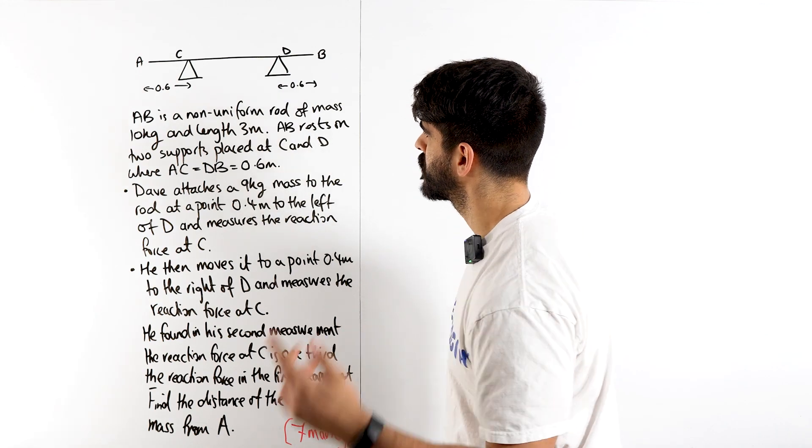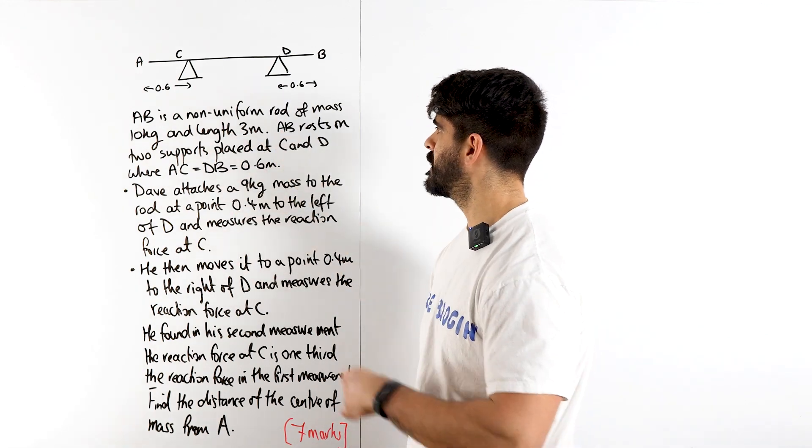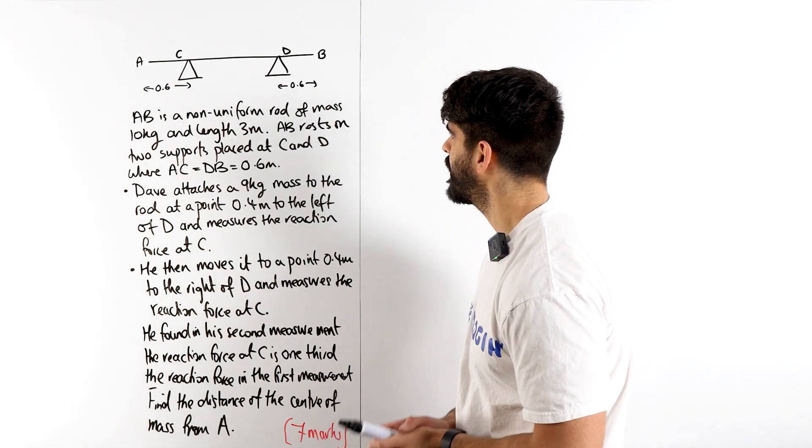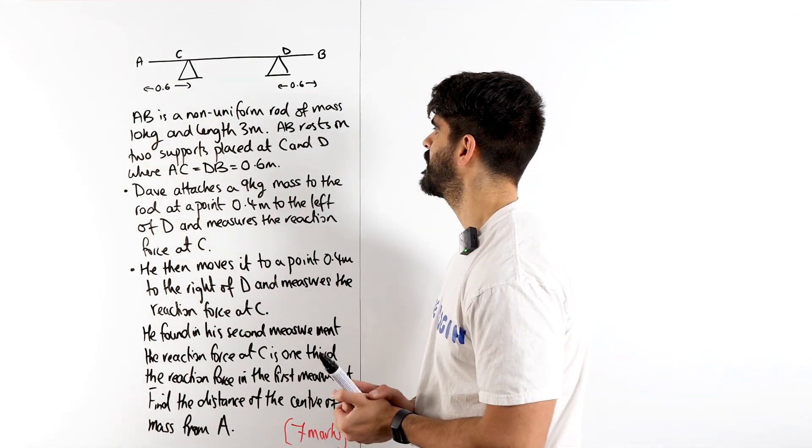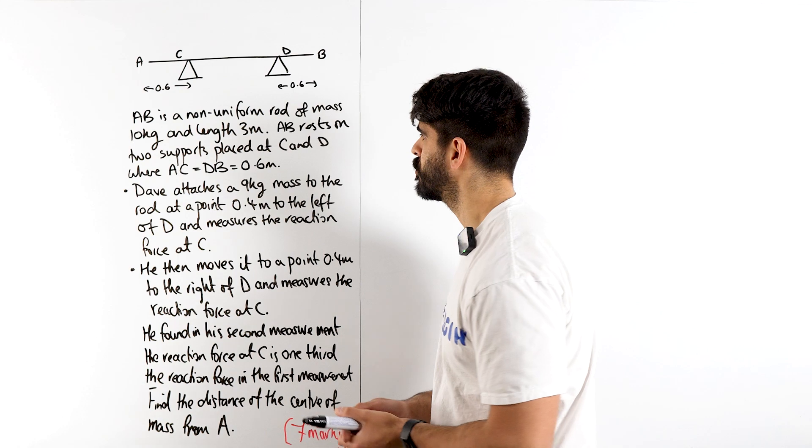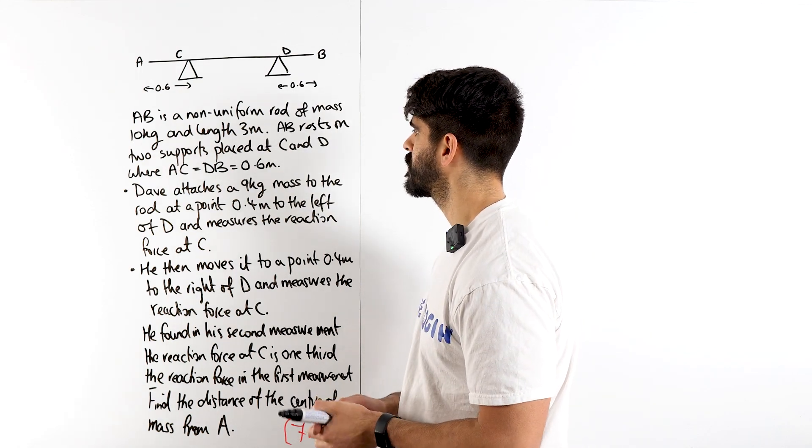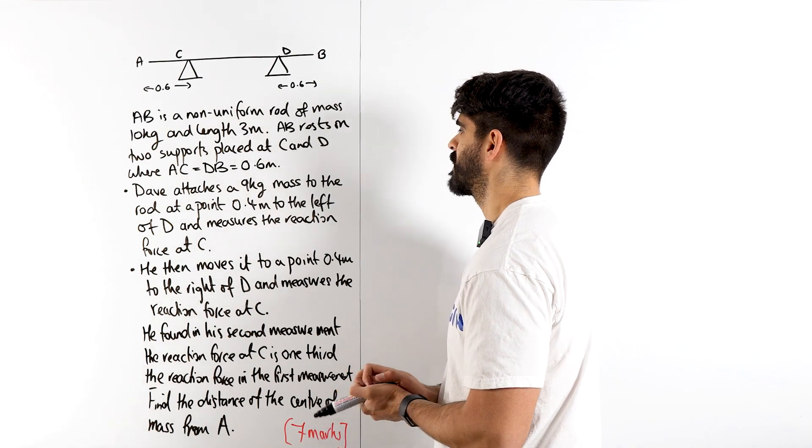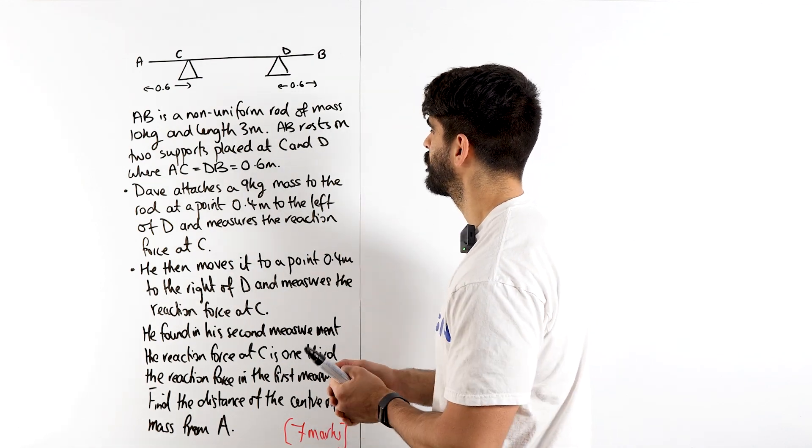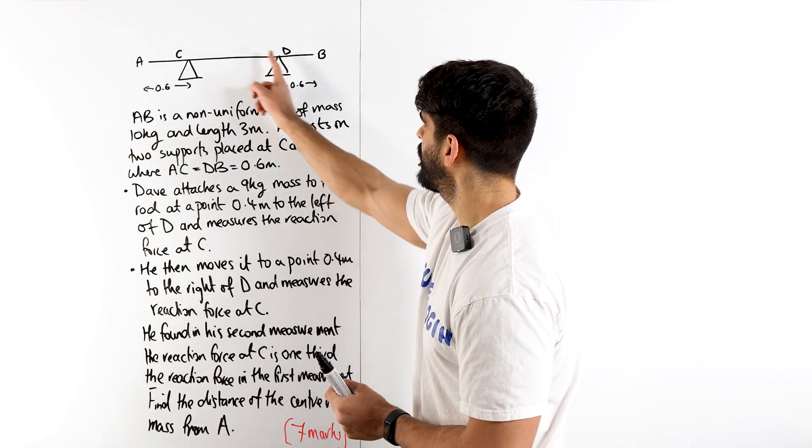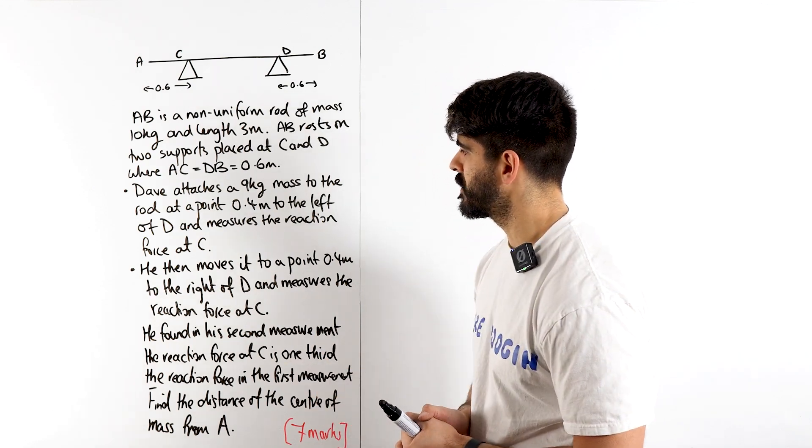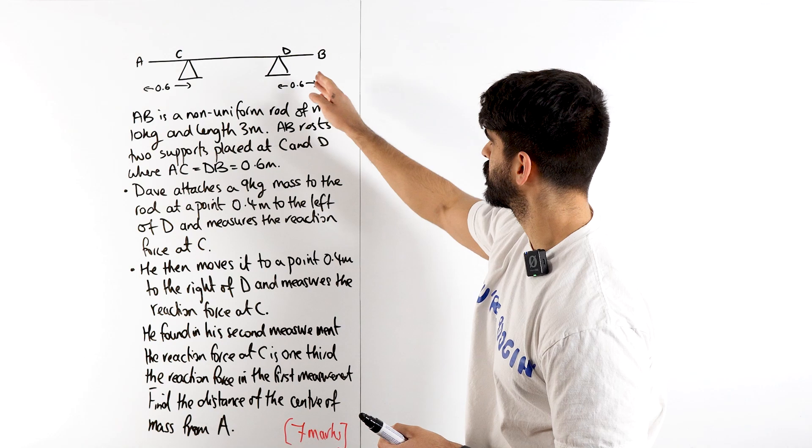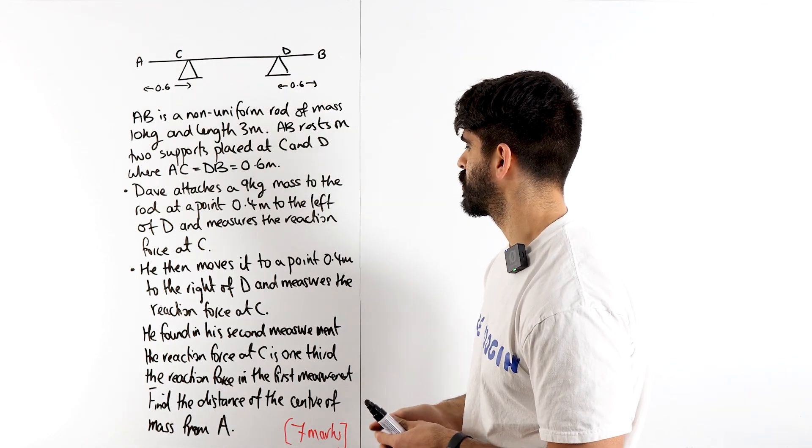My forearms are burning. So, it says AB is a non-uniform rod of mass 10 kg and length 3 meters. AB rests on two supports placed at C and D, where AC equals DB equals 0.6. Dave attaches a 9 kg mass to the rod at 0.4 meters to the left of D and measures the reaction force at C.